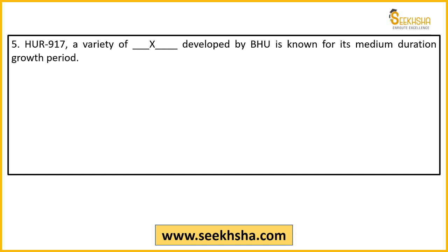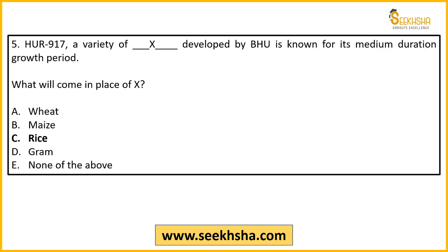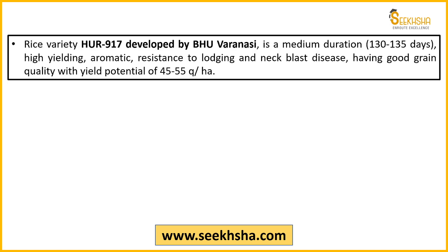Fifth question: HUR 917, a variety developed by Banaras Hindu University, is known for its medium duration growth period. HUR 917 is a variety of which crop? Options: A) wheat, B) maize, C) rice, D) gram, E) none of the above. The right answer is C) rice. HUR 917 is developed by BHU, has a medium growth period of 132-135 days, gives high yield of 45-50 quintals per hectare, has good aroma, is resistant to lodging and neck blast disease, and has good grain quality.